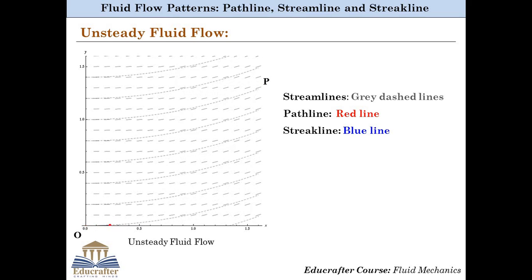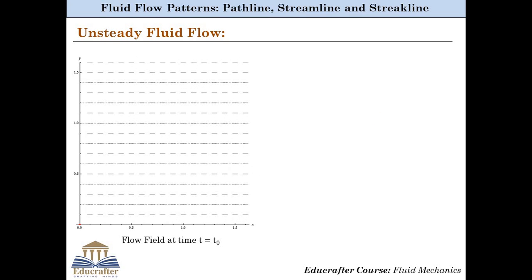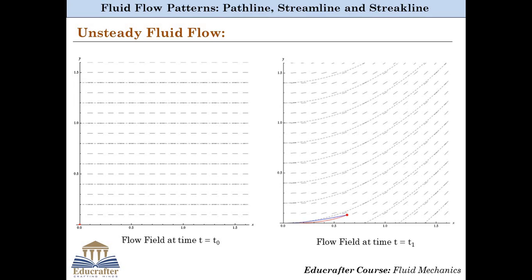Let us understand this phenomenon more rigorously. Initially at time t equal to t0, the flow field is totally horizontal and the fluid is moving in the horizontal direction. At another instant of time t equal to t1, the flow field looks different. At any point in the domain, the local velocity vector is always tangential to the grey dashed lines, and hence these lines are known as streamlines.